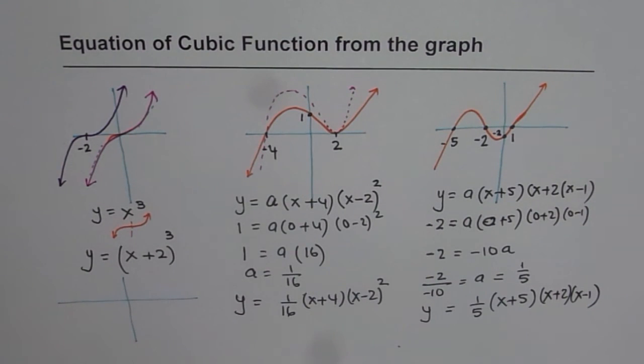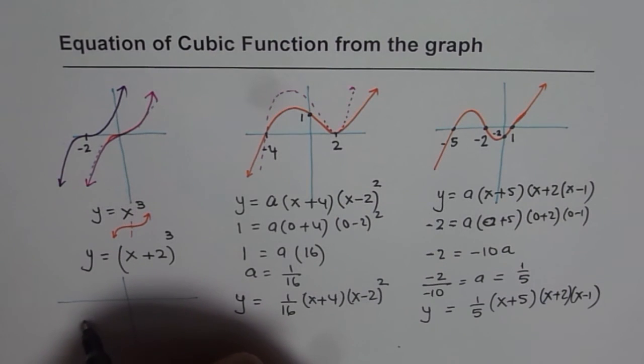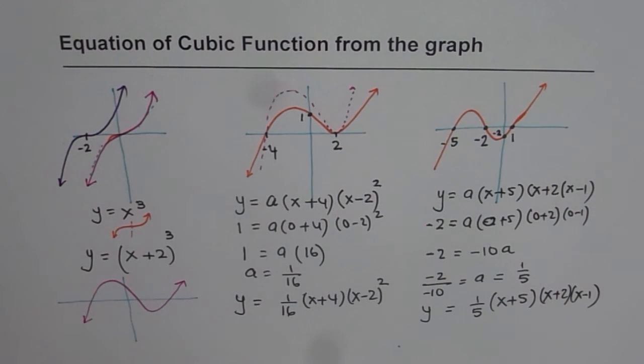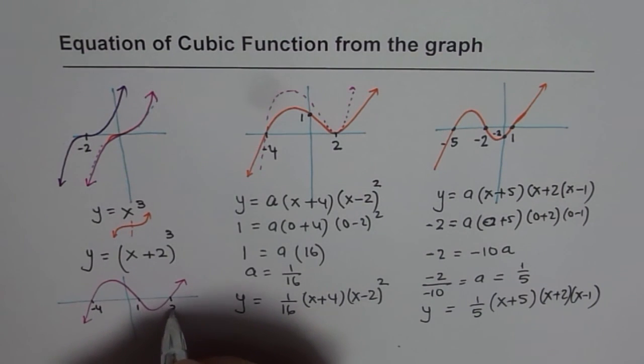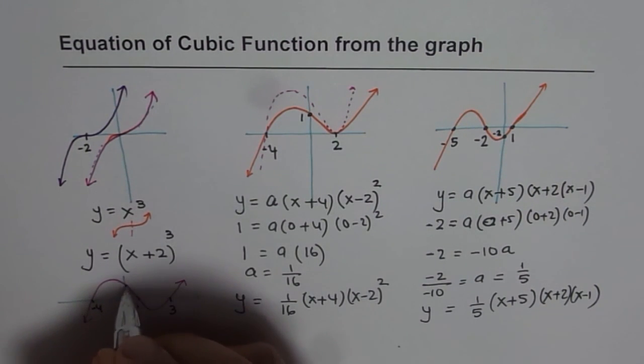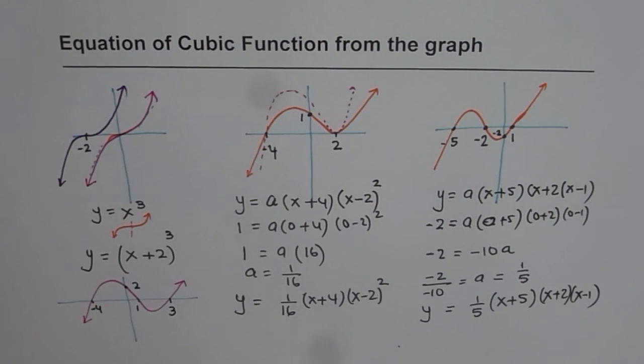So the graph for you is kind of like this. And let's say these points are minus 4, 1, 3, and the y-intercept is 2 for us. Find the equation of this graph using the techniques which we have learned.